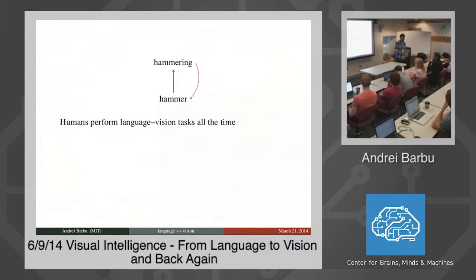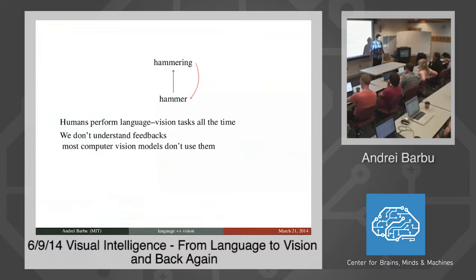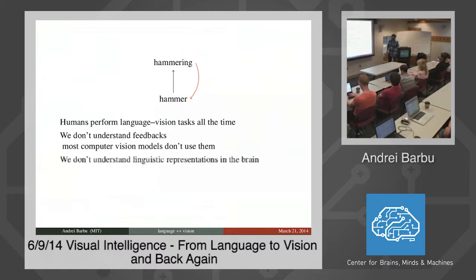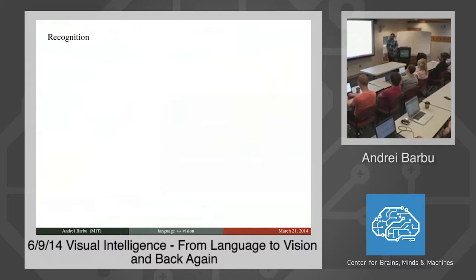Why would you care about this problem? You perform tasks that involve high-level knowledge, sometimes encoded in language, and perception. Every time you ask someone for a cup, they have to realize what you're talking about, which cup you're describing. They may see multiple cups and have to figure out how to ask back which cup you want. We also don't understand how these feedbacks work in the visual system. Anatomists tell us there's a huge amount of feedback, and most computer vision models are feedforward. We also don't really understand linguistic representations in the brain, partly because we don't have a theory that connects language with perception.